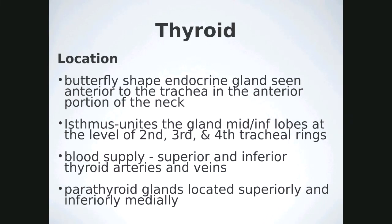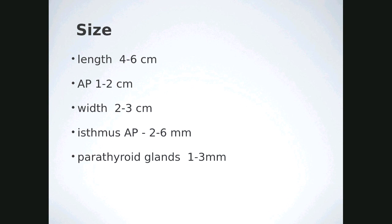The parathyroid glands are situated superiorly, inferiorly, and medially — you can refer back to your cross-sectional notes. The size of each thyroid lobe is about 4 to 6 centimeters in length; the AP measurement is about 1.5 centimeters; the width about 2 to 3 centimeters. The isthmus is small, usually between 2 and 6 millimeters. We often won't see the parathyroid glands unless there's something going on — they are also small, between 1 and 3 millimeters.